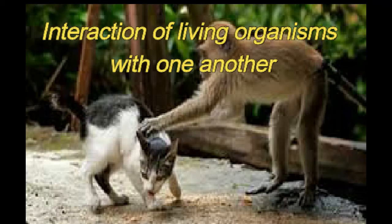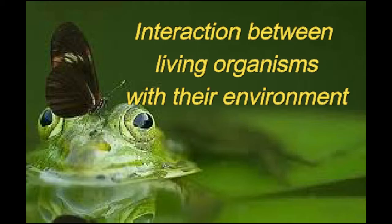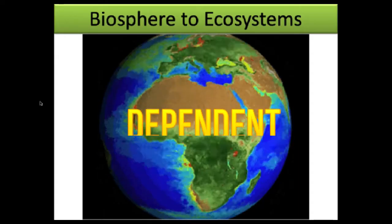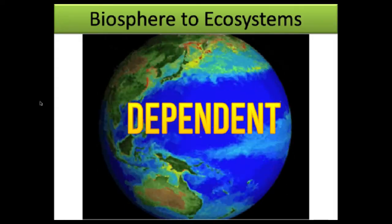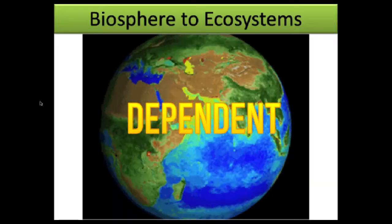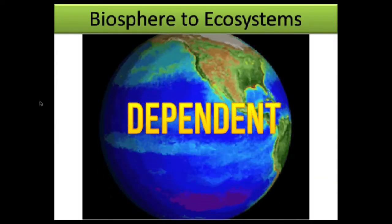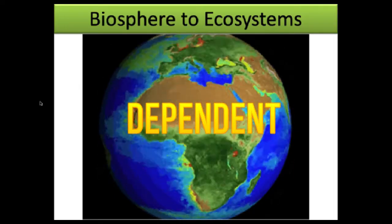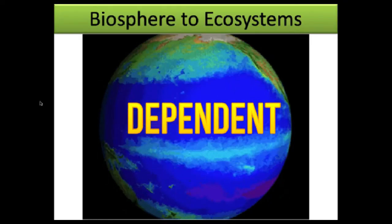We also study the interaction between these organisms and their environment. This means that all organisms are dependent on other organisms as well as on the environment. Organisms don't only depend on one another — they also depend on their environment in order to survive.